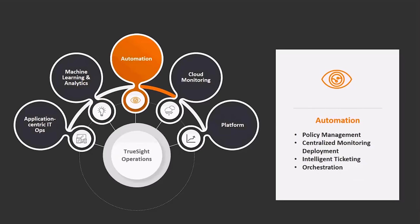The third area is all around automation. To provide a true AI ops solution, automation is required. In TruSight Operations we provide the ability to automate administrative items like endpoint management, as well as orchestrate complex workflows for triage and remediation. From an endpoint perspective, we've introduced the concept of policy management to provide a centralized solution to ensure the correct monitoring is deployed on each endpoint. Additionally, we now provide the ability to keep endpoints up to date with the most current monitoring libraries as well as the most current agent.